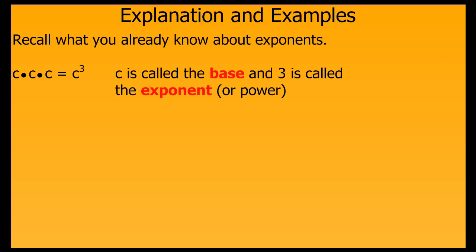Exponents are simply an economical way to write repeated multiplication of the same factor. For example, we can write c times c times c as c to the third power. The factor c is called the base, and the power 3 is called the exponent.